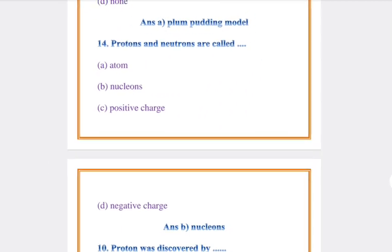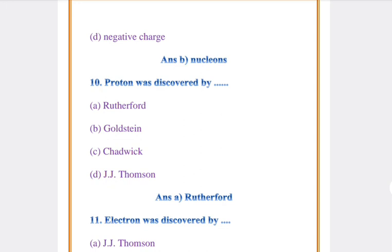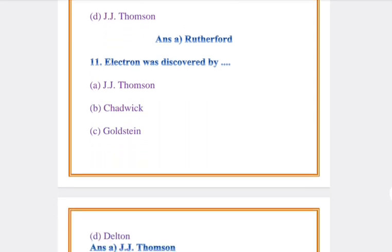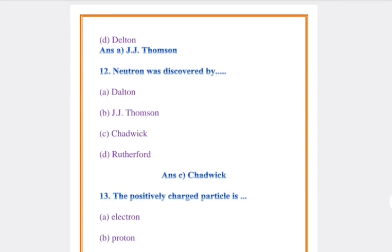Question number 14: Protons and neutrons are called? Answer: B, Nucleons. Protons was discovered by? Answer: A, Rutherford. Electron was discovered by? Answer: A, J.J. Thomson.